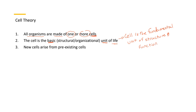And number three: all cells arise from pre-existing cells. Every cell in your body, believe it or not, was formed with the division of a previously living cell. So these are the three main postulates of the cell theory.